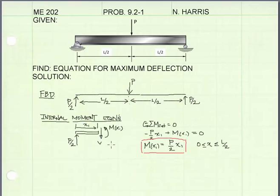Now finding the internal moment equations for the beam: because there's a point load in the middle, we're going to need two moment equations because the point load creates a discontinuity. I'm going to find the internal moment equation by taking a cut through the left side of the beam at some distance x1. I'll put on the external reaction P over 2, draw the internal resultant forces using the positive sign convention — a shear arrow pointing downward and the moment arrow pointing counterclockwise, labeling it as the moment in terms of x1. Summing moments about the cut equal to zero, this equation applies for x1 from 0 to L over 2, covering the left half of the beam.